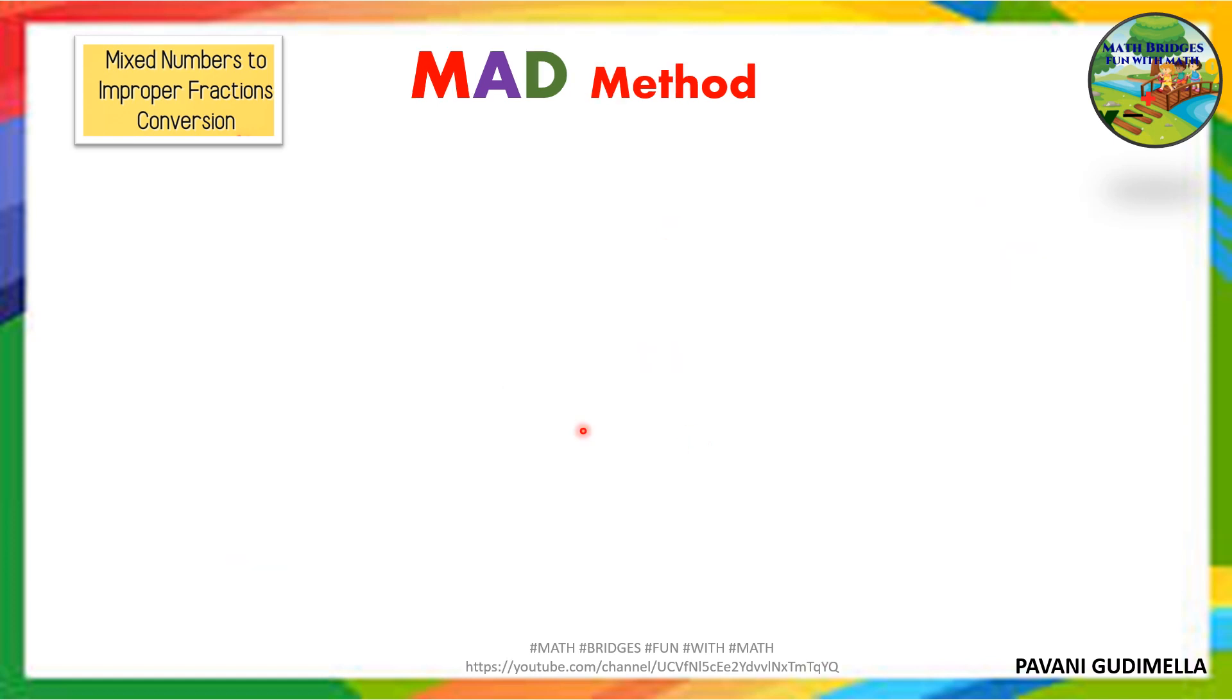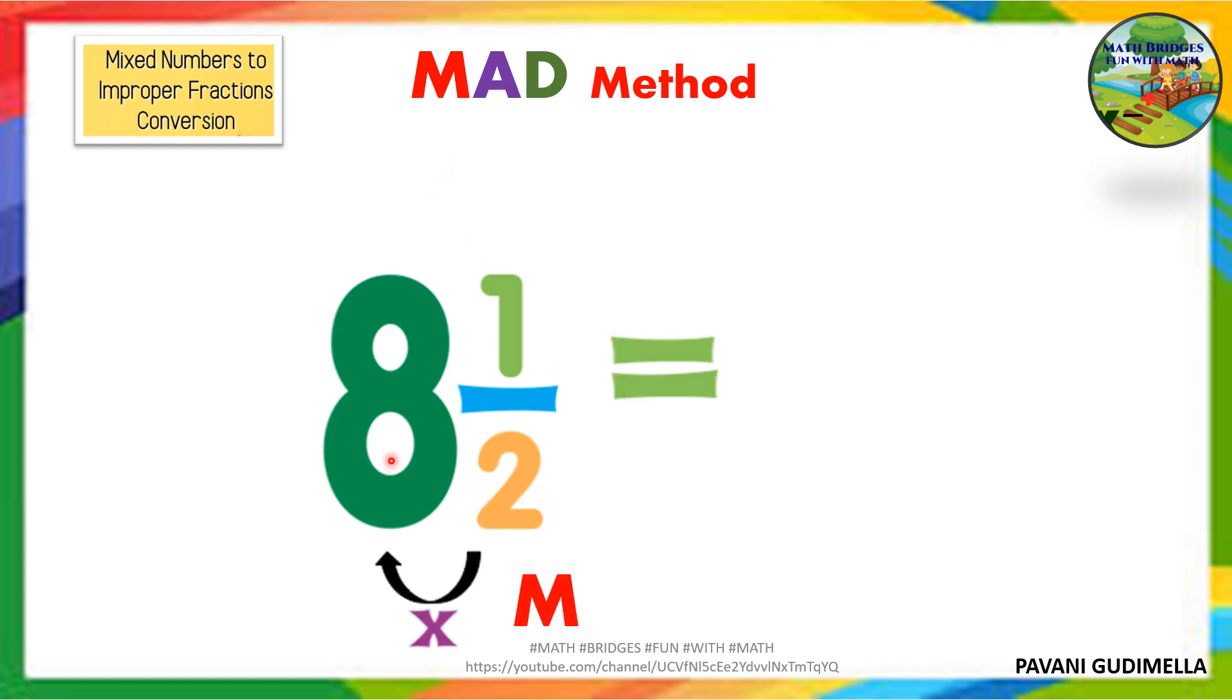Let's take one more example now. Let's convert using the same MAD method. 8 1/2. First multiply denominator and the whole number: 2 times 8 is 16. Next, add. Which one you will add to that one? 1, the numerator. So plus 1. And D, denominator remains the same. So 2 times 8 is 16, 16 plus 1 is 17/2. Hopefully this MAD method will be very helpful for you to solve mixed fractions into improper fractions.